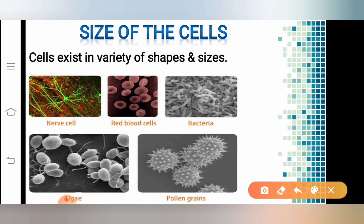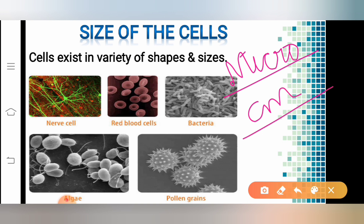When I talk about the size of the cells, the size of cells in living organisms may be as small as micrometers or as large as a few centimeters. However, most of the cells are microscopic in size because they are very small — they cannot be seen with the help of our naked eyes. The cells cannot be seen with the help of our naked eyes.